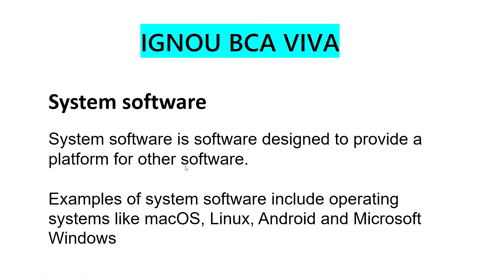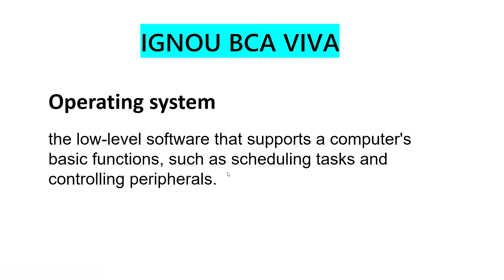What is system software? Examples include Linux, Android, or Windows. System software provides a platform for other software. The operating system is also system software, and low-level software supports basic functions such as scheduling tasks, controlling and managing peripherals.